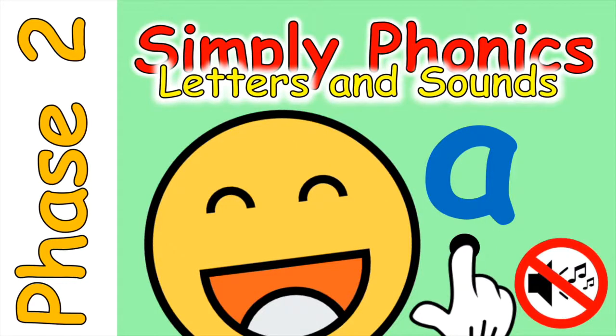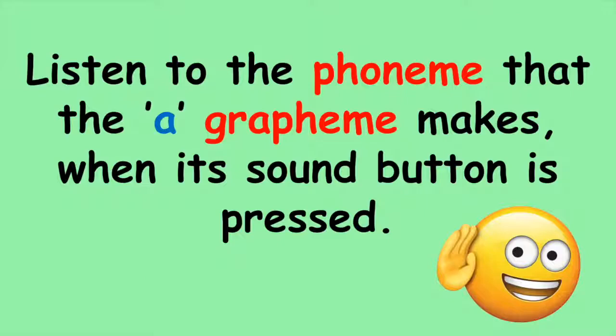Simply Phonics. Phase 2 letters and sounds. Listen to the phoneme that the A grapheme makes when its sound button is pressed. A.